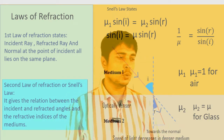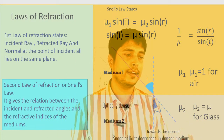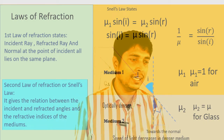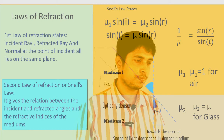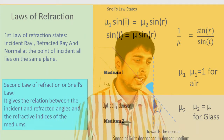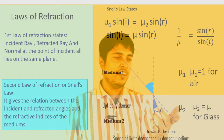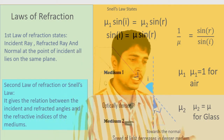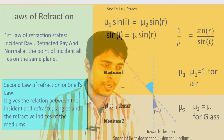Medium 2 is where the ray refracts into, and medium 1 is where the ray comes from. Medium 1 is air and medium 2 is glass. So the refractive index of glass with respect to air equals the speed of light in air divided by the speed of light in glass — that is, V1 upon V2. Since the velocity of light in glass is lower and in air is higher, the refractive index is greater than 1.